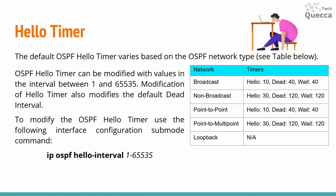The default OSPF hello timer varies based on the OSPF network type. For broadcast networks, the hello timer is 10 seconds and the dead interval is 40 seconds. But for non-broadcast networks, the hello timer is 30 seconds and the dead interval is 120 seconds. The OSPF hello timer can be modified with values in the interval between 1 and 65535.